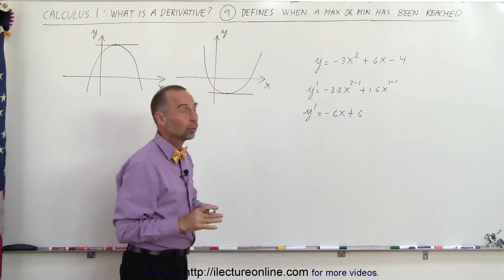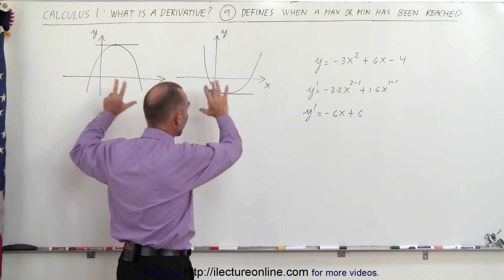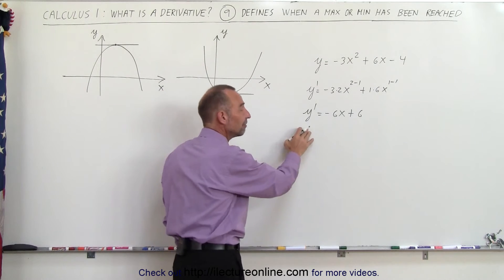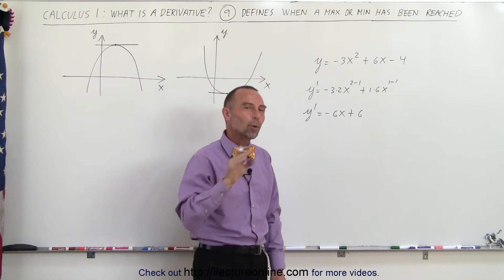Now, we don't know what the function looks like—it's probably not going to be like either one of these two—but we do realize that this is the derivative and we're going to find the maximum or the minimum.